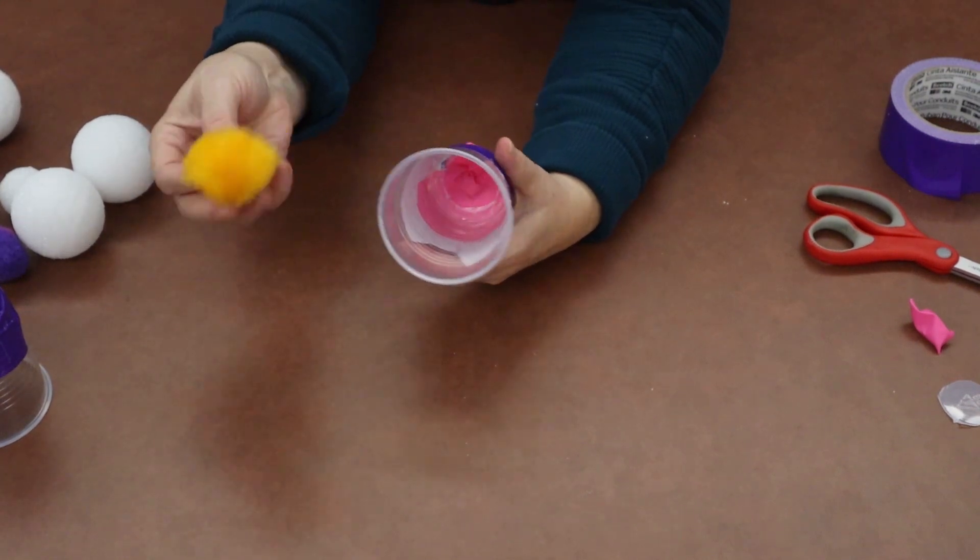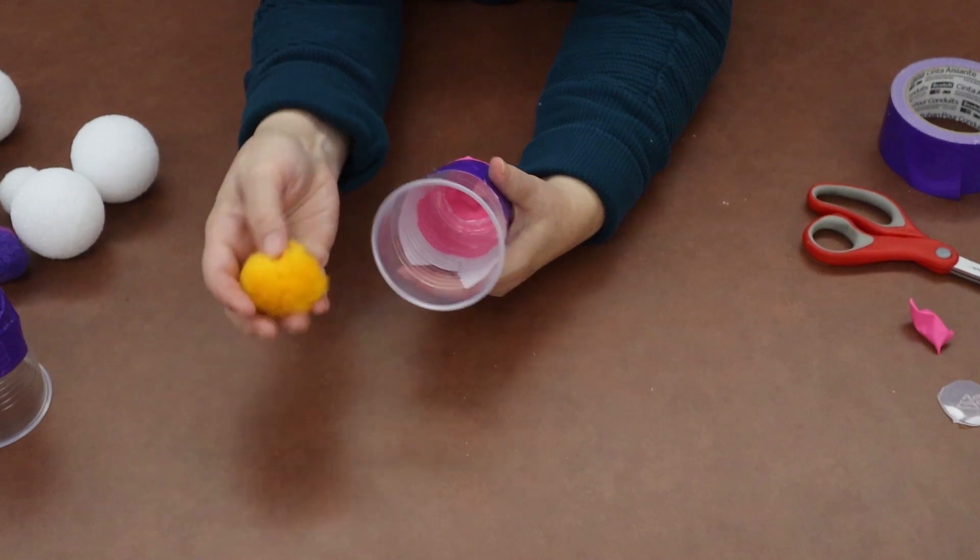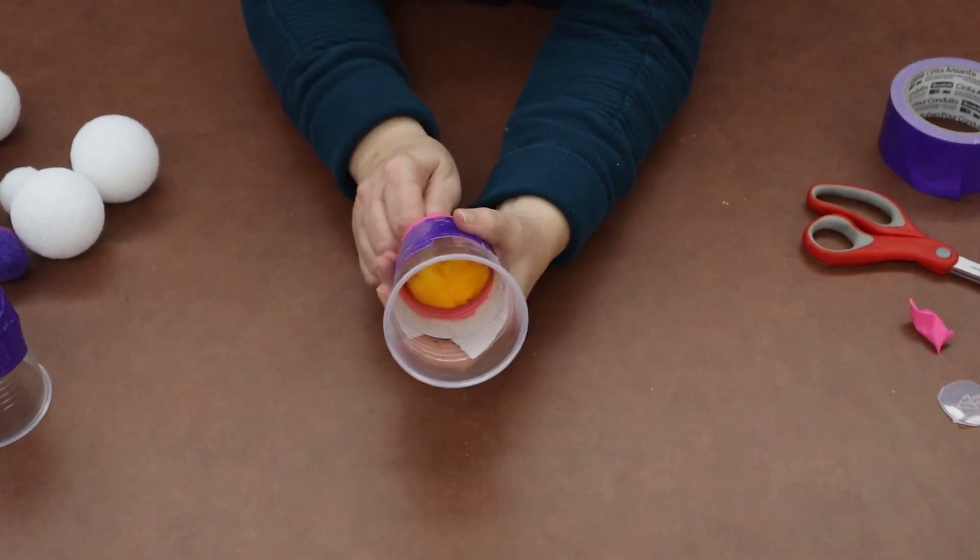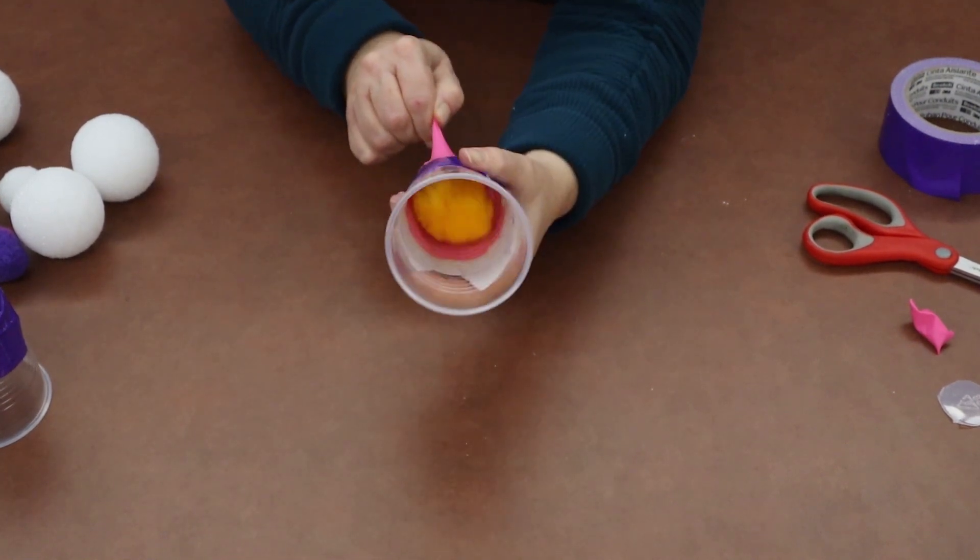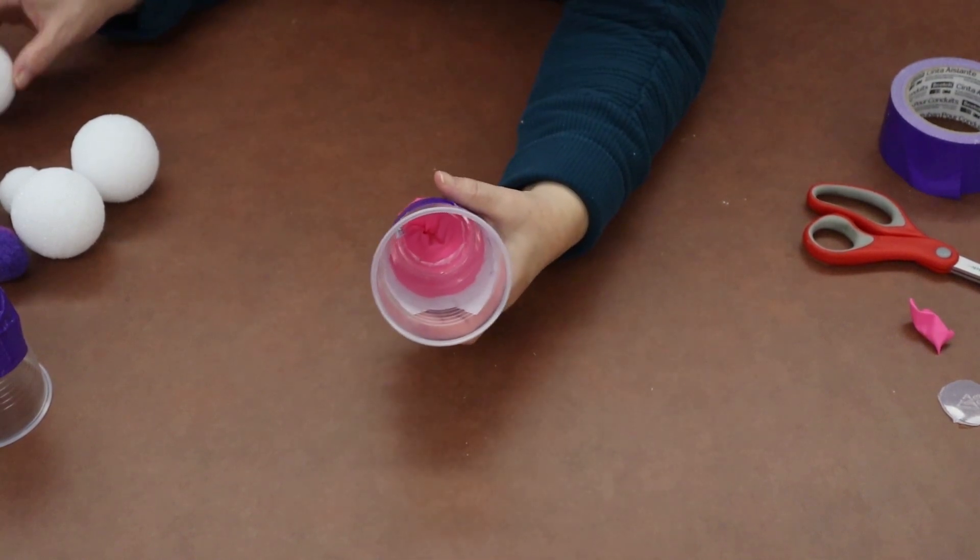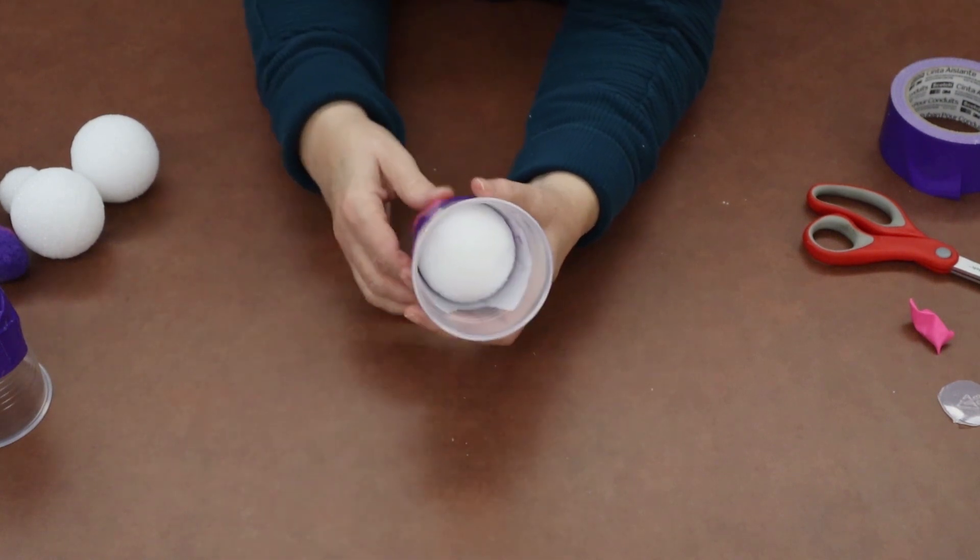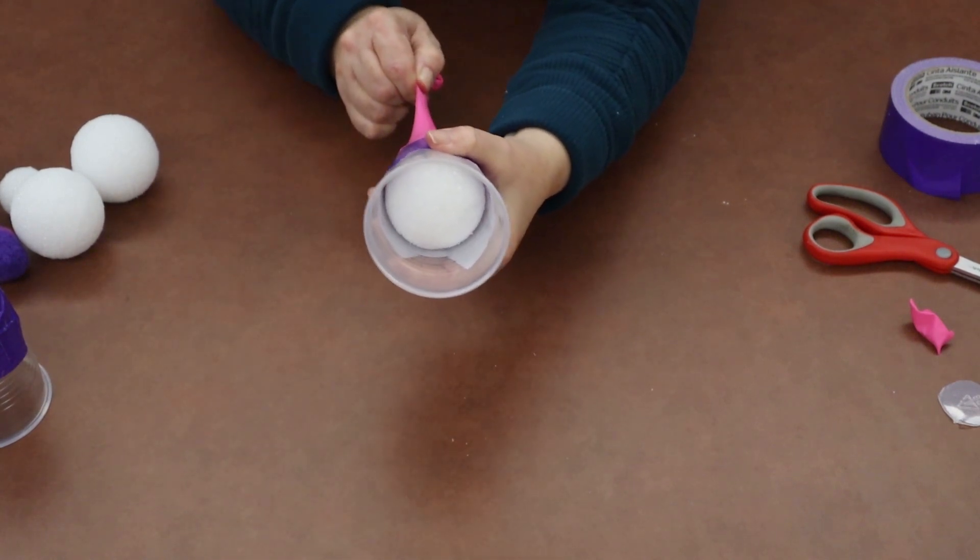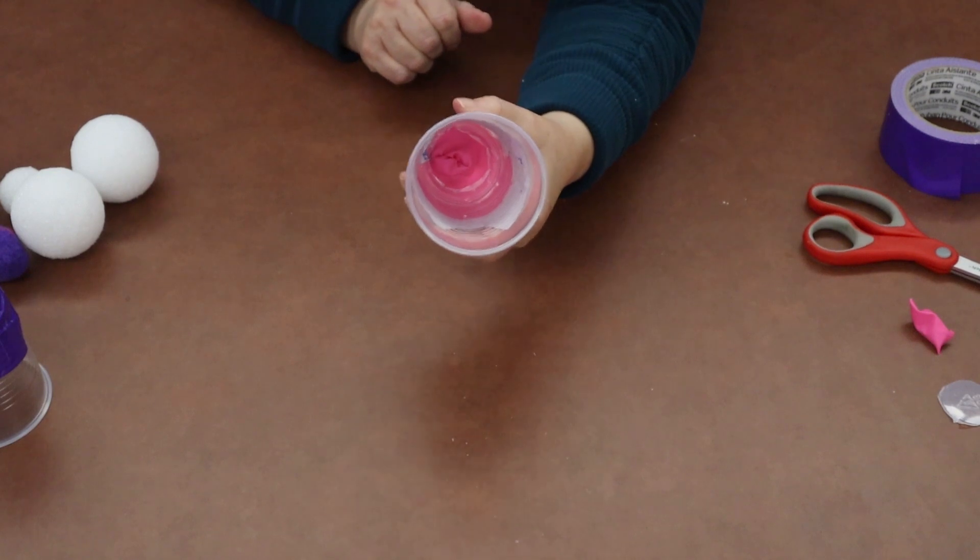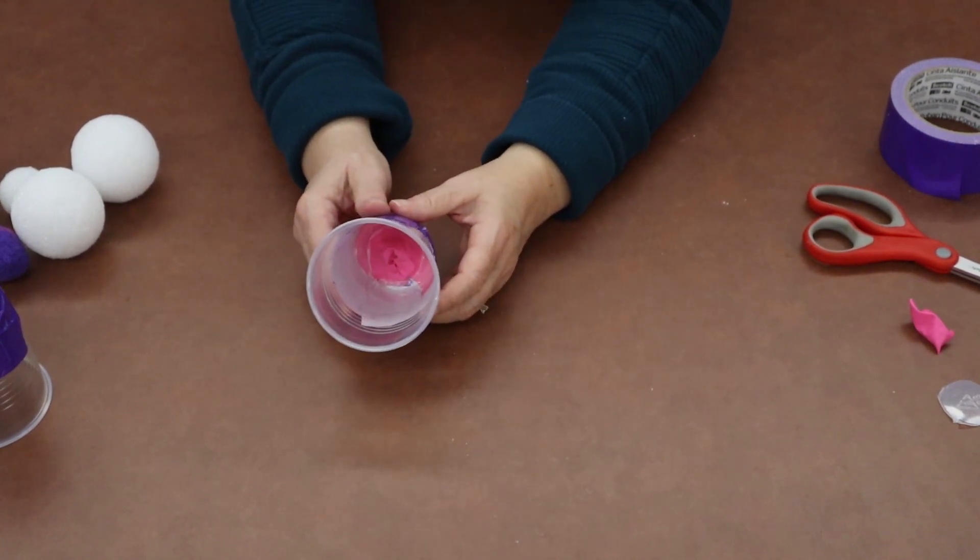And just try different things and see if the weight of them, what they're made of, will shoot further. We'll try it again. Pull it back. And there you go. This time I've got a Styrofoam ball. We'll put it in there. Pull it back. And there we go. And that is your snowball shooter.